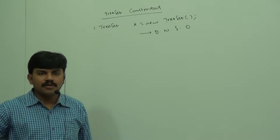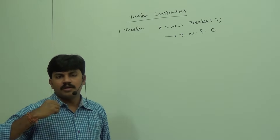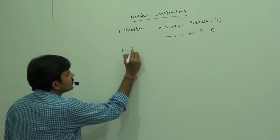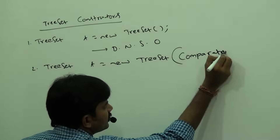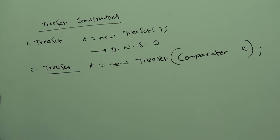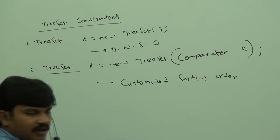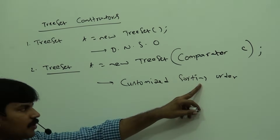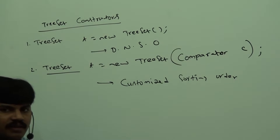But sometimes you don't want default natural sorting order — you want customized sorting, your own sorting. For example, all employees inserted by salary or by ID. Then use the second constructor: TreeSet t = new TreeSet(Comparator c). This creates an empty TreeSet where elements are inserted according to the customized sorting order defined by the Comparator object.